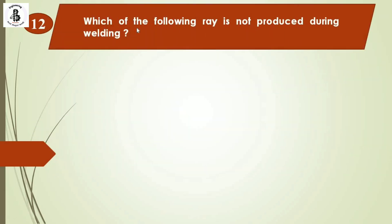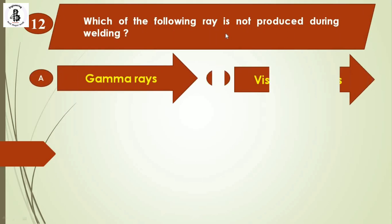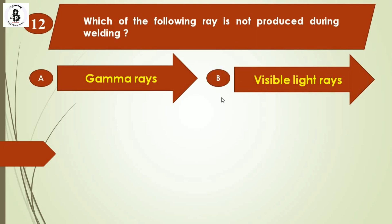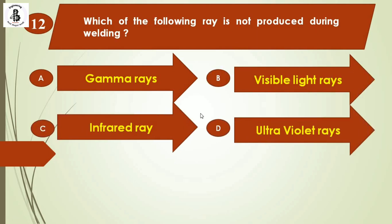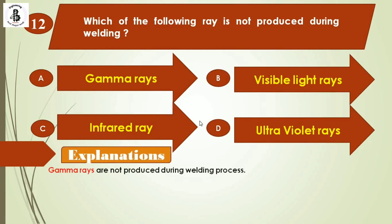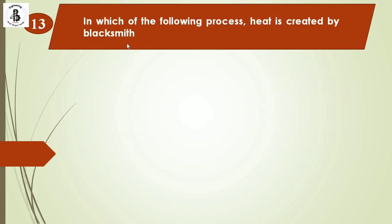Question 12: Which of the following rays is not produced during welding? Option A: gamma rays, option B: visible light rays, option C: infrared rays, option D: ultraviolet rays. From a practical standpoint, gamma rays are not produced during the welding process. The right answer is option A.